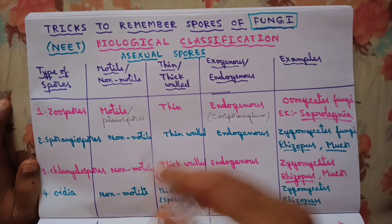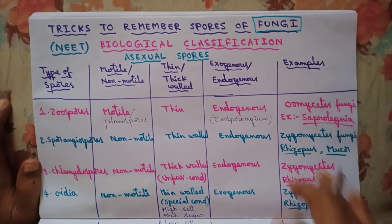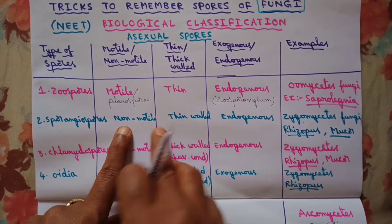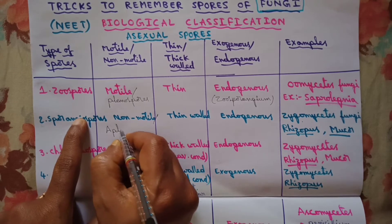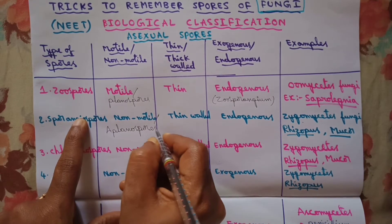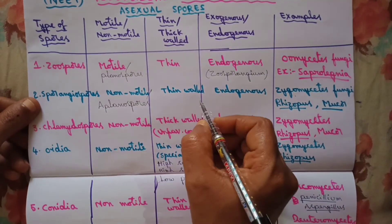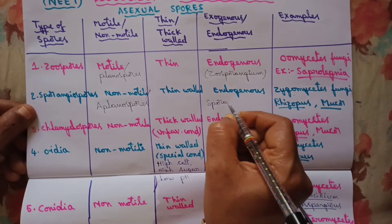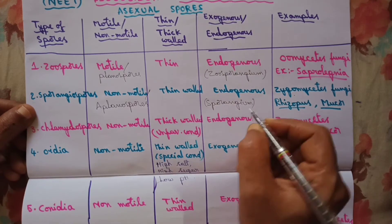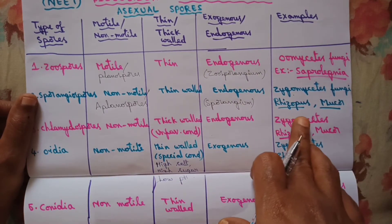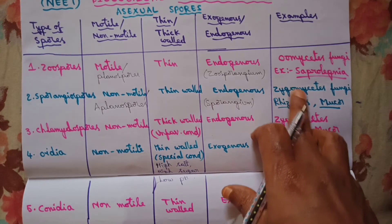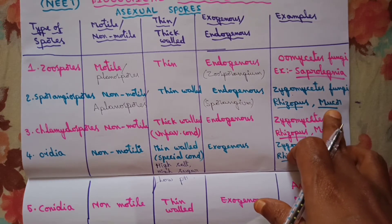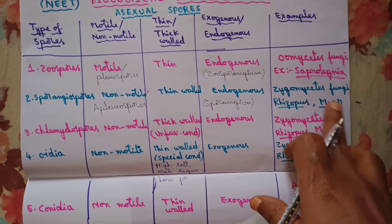Both oomycetes and zygomycetes belong to phycomycetes. The next type of spore is the sporangiospore. These are formed inside a sporangium, hence they are endogenous in origin. These are produced by zygomycetes fungi, which also belong to the class phycomycetes. Examples are Rhizopus and Mucor. Rhizopus is also called pin mold or bread mold. Mucor is also called dung fungus or coprophilous fungus because it grows on dung.